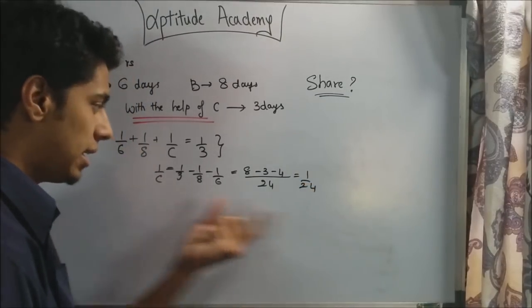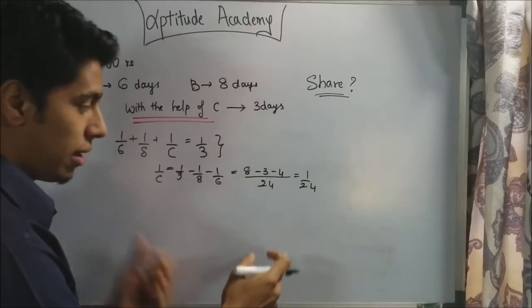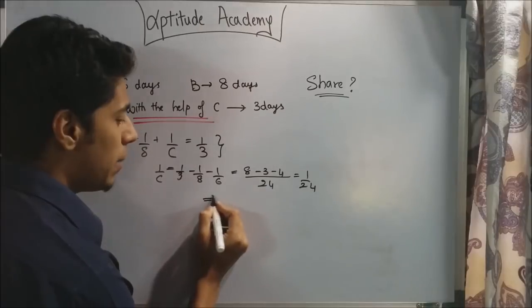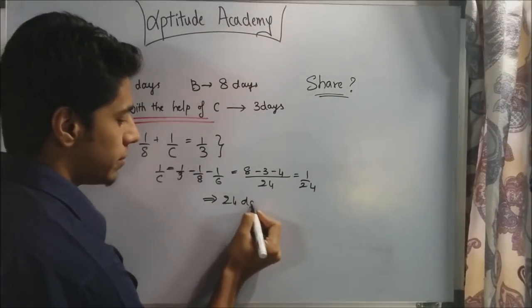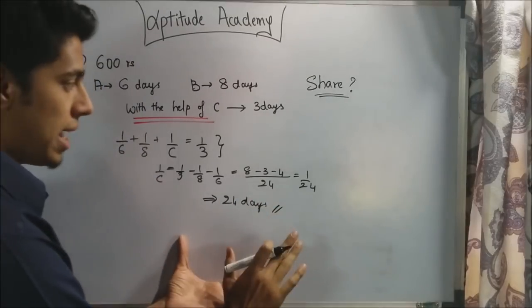This is 1 by C. So C finishes 1 by 24th of the work every day. By rule of flip, if it finishes 1 by 24th of the work every day, C will take 24 days to finish the work. Now, this is not the answer.